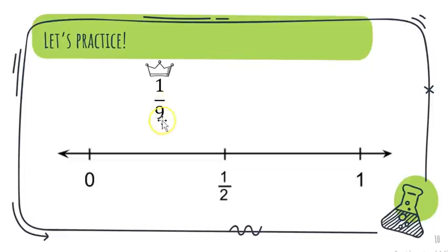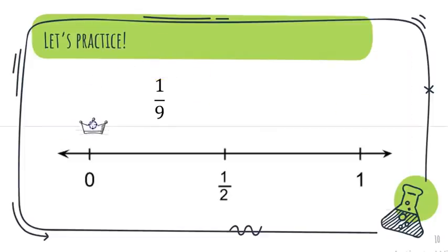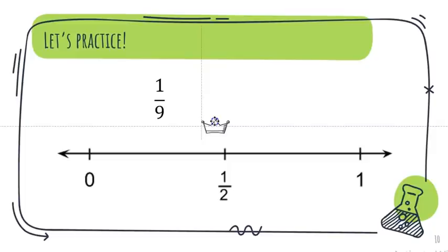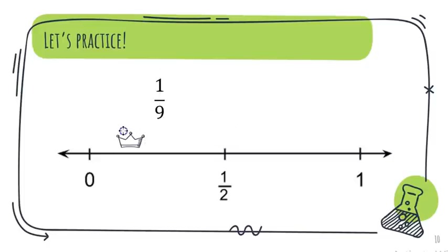One-ninth: my denominator is nine, so to get from zero to a whole I have to go nine spaces, and I have one. One is a pretty small number. Nine is an odd number so it's a difficult half, but four plus four is eight, so four and a half is about halfway between nine. One is smaller than four and a half, so one-ninth is between zero and a half.